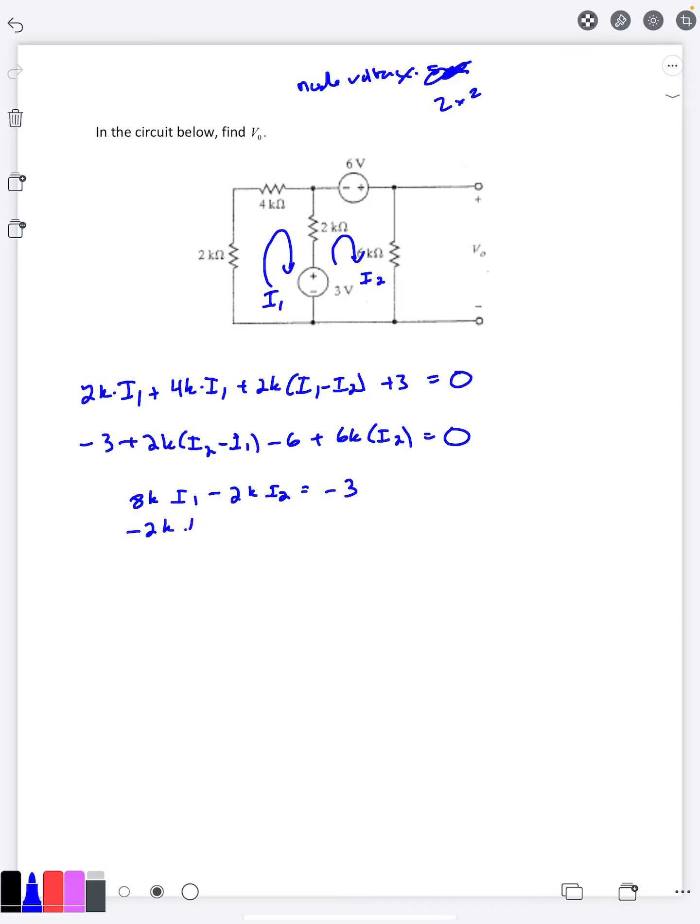And then the second one here, minus 2k i1 plus 2k i2 plus 6k i2 is 8k i2, and then this one equals 9.